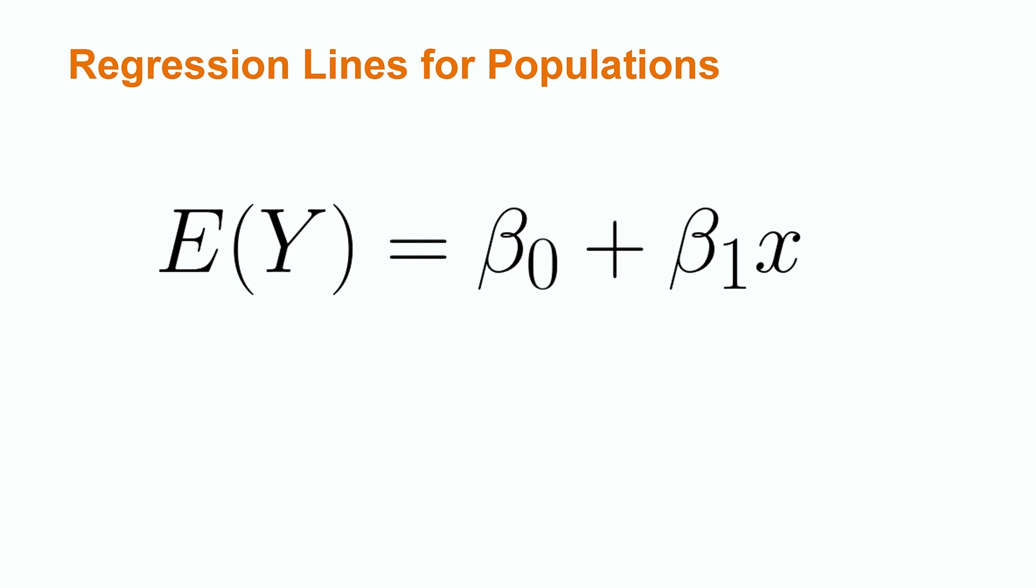This formula is E of Y equals beta sub 0 plus beta sub 1 times x. E of Y represents the mean or expected value of y for all members of the population that have a certain value for x. y hat is actually an estimate of E of Y.